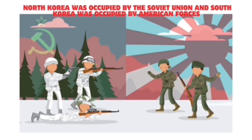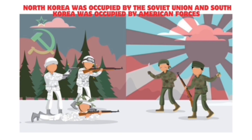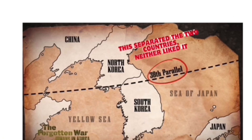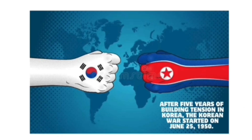After World War II in 1945, Korea was freed from Japanese control. North Korea was occupied by the Soviet Union while South Korea was occupied by American forces. North and South Korea were still at odds because of the border between them — they did not accept it as permanent. After five years of building tension in Korea, the Korean War started on June 25th, 1950.